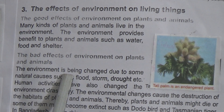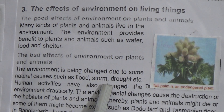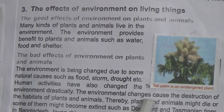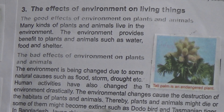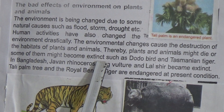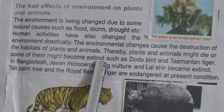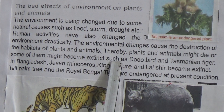The bad effects of environment on plants and animals: the environment is being changed due to some natural causes such as flood, storm, and drought. Human activities have also changed the environment drastically. These environmental changes cause the destruction of habitats of plants and animals. Thereby, plants and animals might die or some of them might become extinct, such as the Dodo bird and the Tasmanian tiger — they have already been lost from our environment.